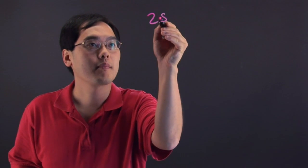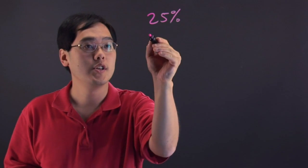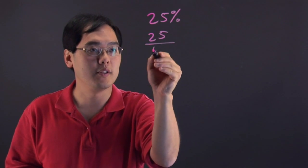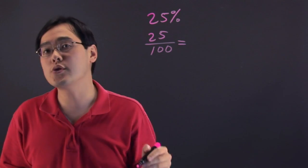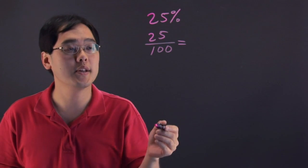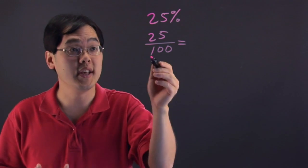We're going to talk about a couple of quick easy ways that you can calculate 25% off on your own before you can decide whether something's a good deal or not. One thing to think about with 25% off is that 25% is 25 out of 100. So if you think about it in that particular context, you can actually reduce 25 over 100 rather easily, because 25 goes into 100 evenly.